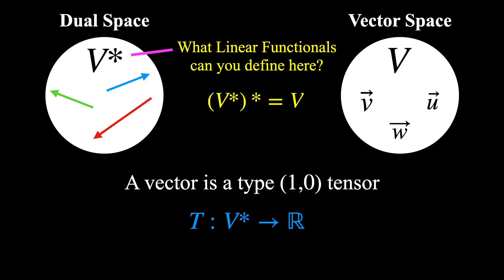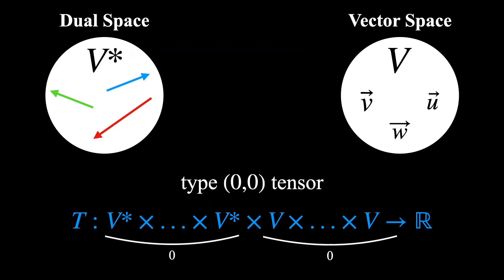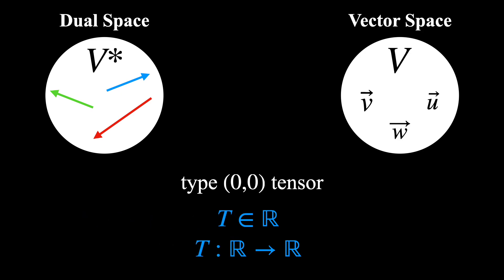Thus, the dual space of V star is just V. And finally, how about a (0,0) tensor? This can be viewed as a real number or equivalently as a map from a real number to another real number. So it's just a scalar.